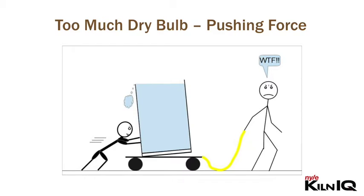So what happens if there is too much dry bulb, or the temperature is too high? One of two things can happen. Number one: there's not enough moisture ready to evaporate from the wood surface and the EMC is very low. The wood surface will dry out too rapidly, causing case hardening or surface checking. This normally happens when the dry bulb increases too fast during startup — dry bulb should be ramped up slowly.